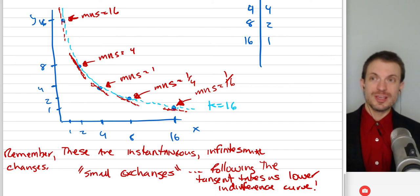Nevertheless, the interpretation is, indeed, at that point, Bob would be willing to give up 16 units of Y to get an additional unit of X here. Here, Bob's willing to give up 4 units of Y to get 1 more X, 1 unit of Y for 1 X. And then here, Bob would give up 1 unit of Y to get 4 units of X, or 1 unit of Y to get 16 units of X.